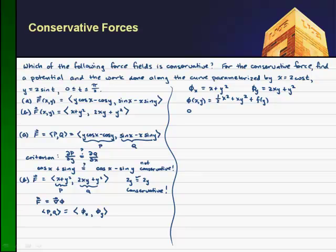And if we look at the other function, 2xy plus y squared, and we take the partial integral with respect to y, I should get xy squared from the first term plus one-third y cubed plus some arbitrary function in x.